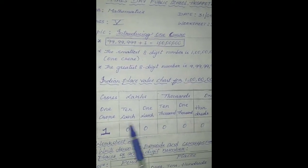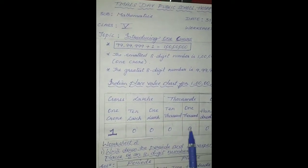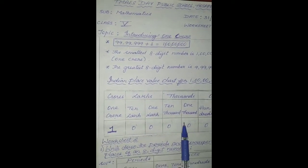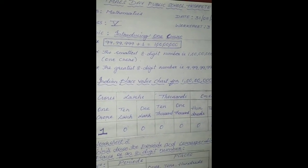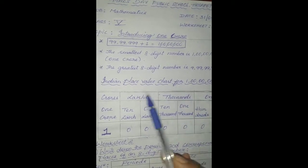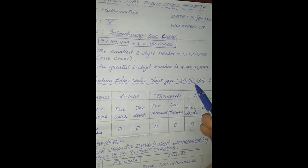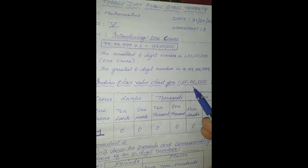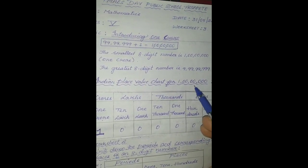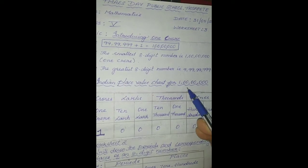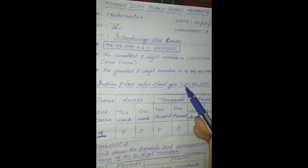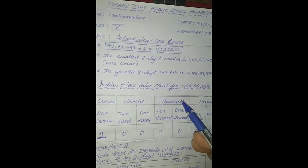We can place 1 crore in the Indian place value chart. In the Indian place value system, we put a comma after the first 3 digits, then after every 2 digits.